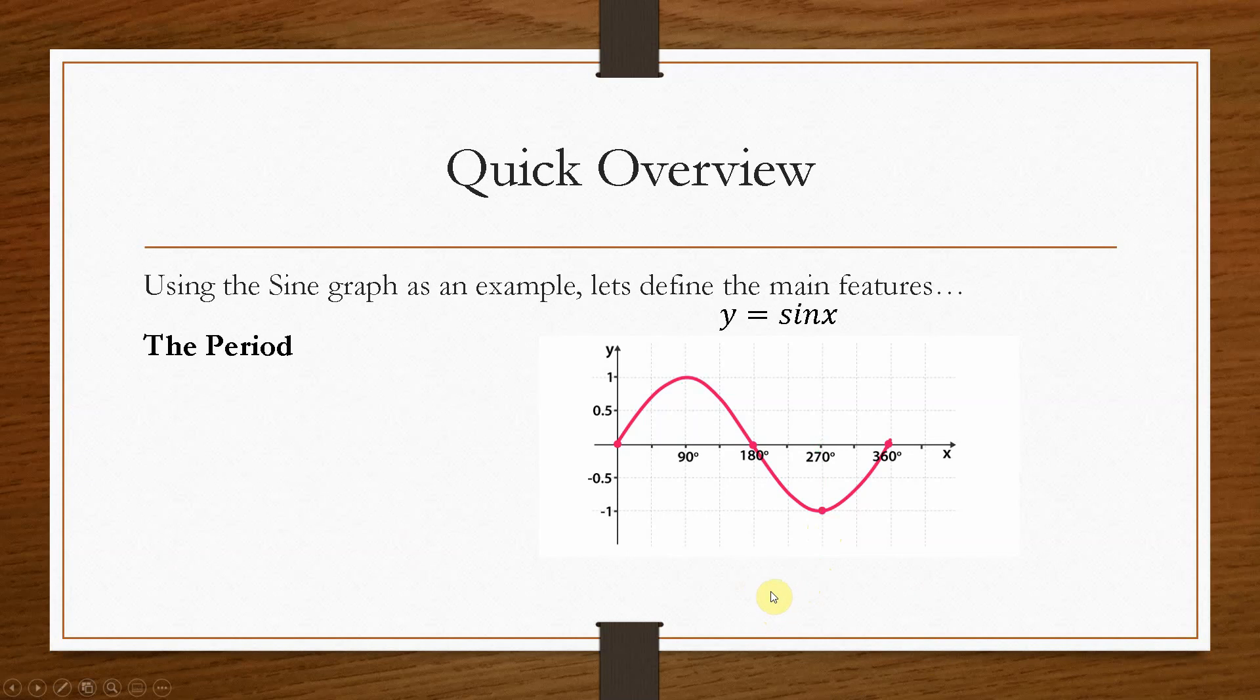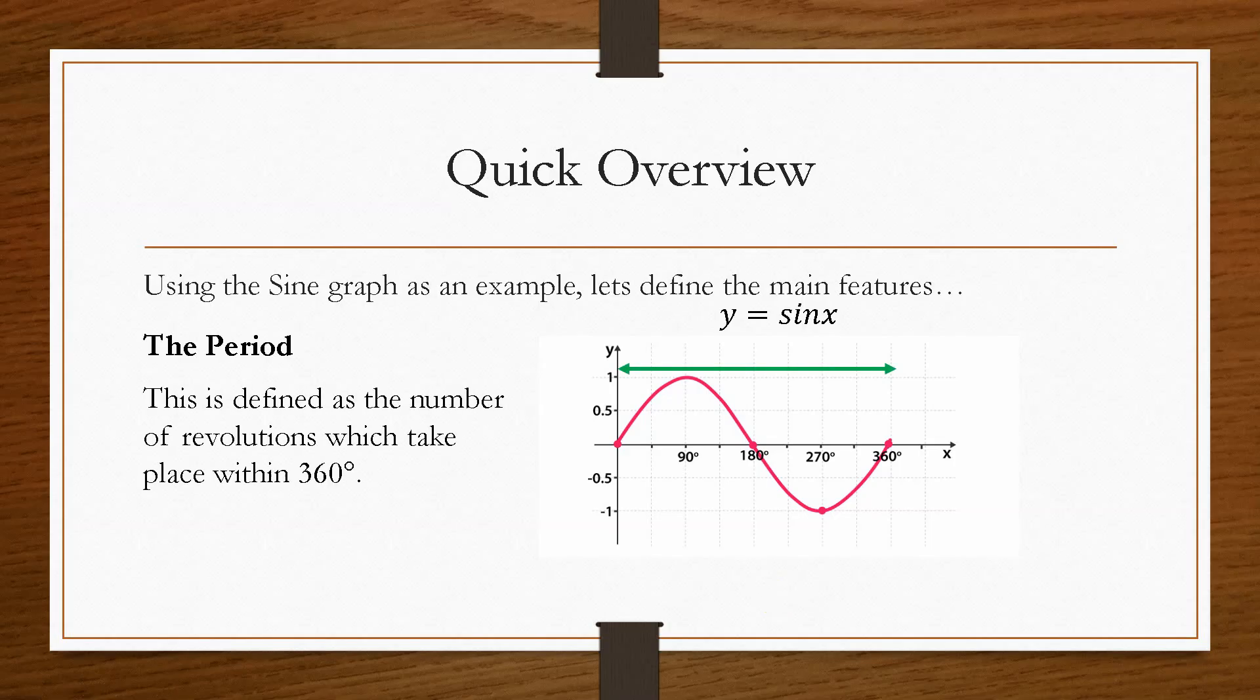The next one that we need to know is something called the period. Now the period, this time, is regarding the number of revolutions within 360 degrees. So a standard graph, y equals sine x, has a period of 1, because there is 1 revolution within 360 degrees. So it can, just like the amplitude, it can be increased or decreased. We can compress it or expand it, depending on the information that we've been given. And a value that's multiplying the x, so the last one to affect the amplitude, the a was here. This time, if we have a value multiplying the x, that will tell us how many revolutions we have within 360 degrees.